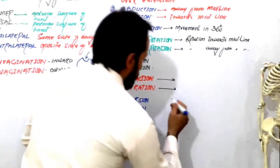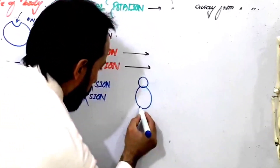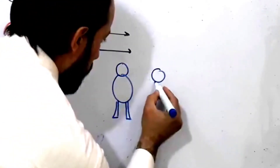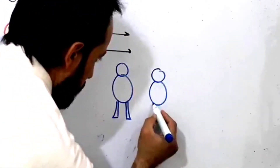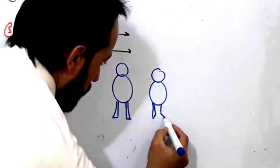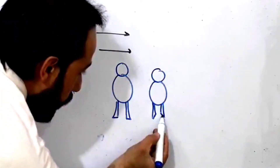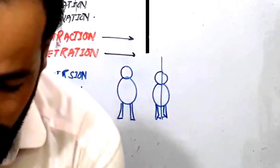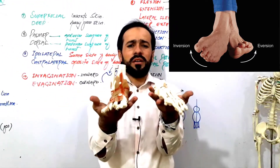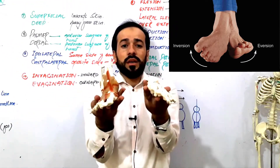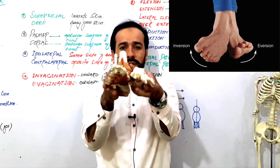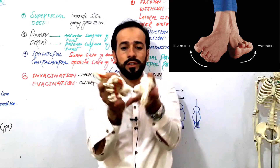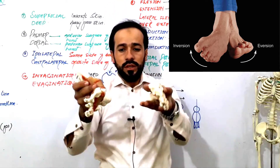Here is our friend standing — these are his feet. Consider this like a baby and I am holding his feet in my hand. When he does movements like this, this is called inversion, because the sole of his feet are pointing towards the midline of the body.